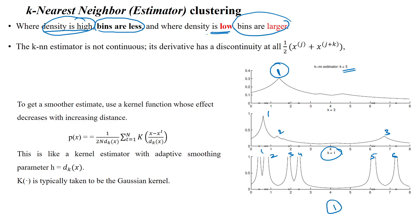From this we can see that k is not a continuous value — it is a discrete value. To get a smoother estimator, we have to use a kernel function to know the number of neighbors available in each bin.